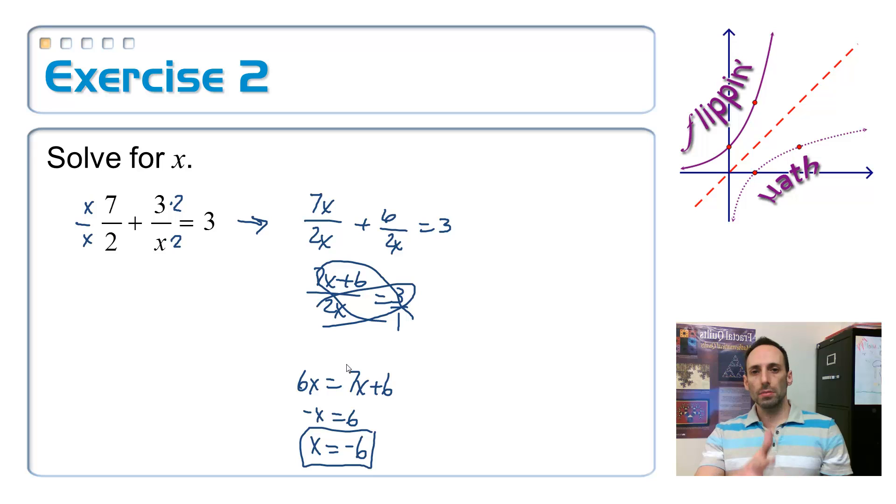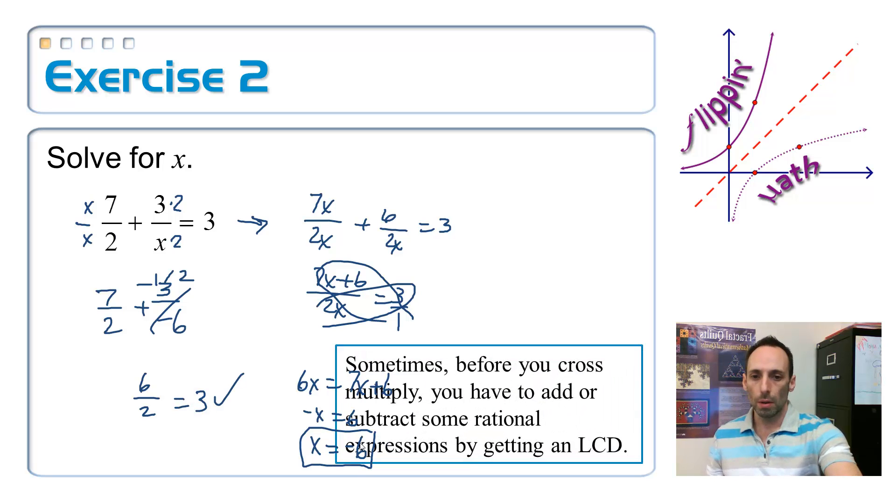Now just check to make sure that it's not going to make any dividing by 0, any denominator equal to 0. So if I stick it in right here, I get 7 over 2 plus 3 over negative 6. This makes this negative 1 half. That is 6 over 2, which is equal to 3. That definitely checks out. Look at that. We did our problem correctly. Sometimes before you cross-multiply, you have to add or subtract some sort of rational expressions by getting a least common denominator. That's exactly what we just did.